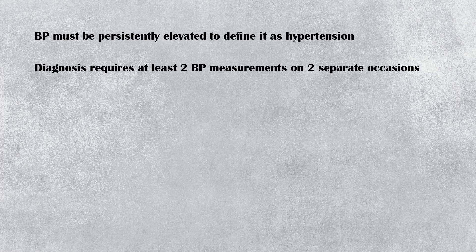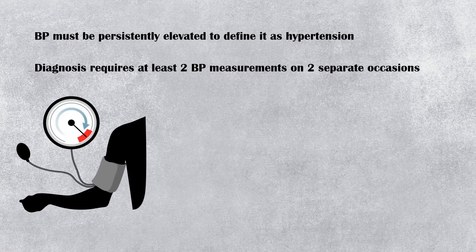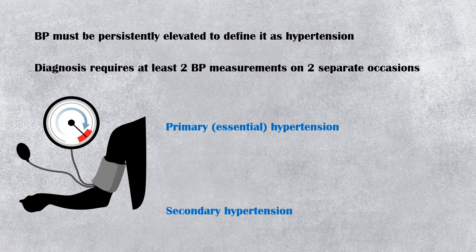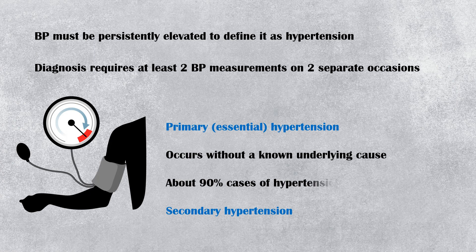Hypertension can be classified into primary or essential hypertension and secondary hypertension. Primary hypertension occurs without a known underlying cause, and it accounts for about 90% of cases of hypertension.